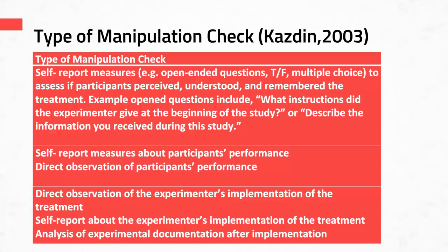The manipulation checks listed in this table are those outlined by Kasdan in his 2003 research text. First, you can use self-report measures — essentially a survey with open-ended questions, true-false questions, or multiple-choice questions that assesses the treatment from the participant's perspective, including how they understood and remembered the treatment. For example, you may ask: Was the instruction given at the beginning of the study? Describe the information you received during the study. Or: Did you receive X, Y, and Z six times — true or false?